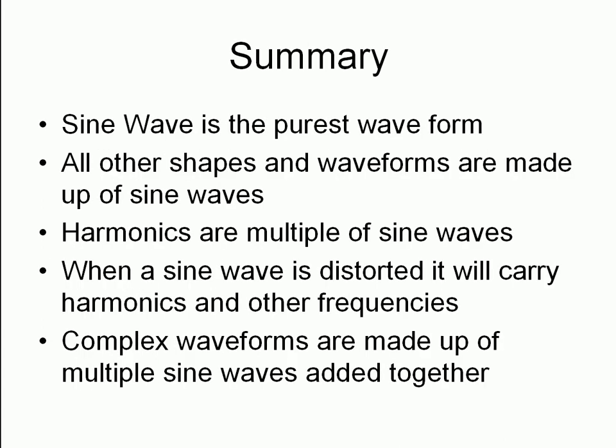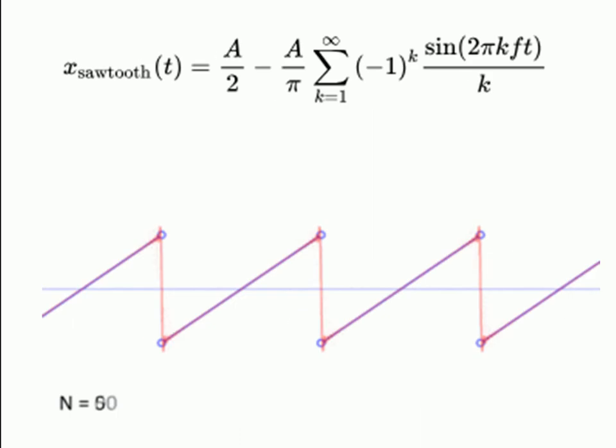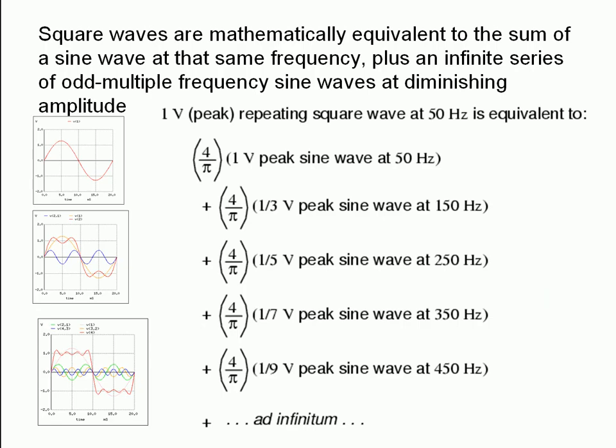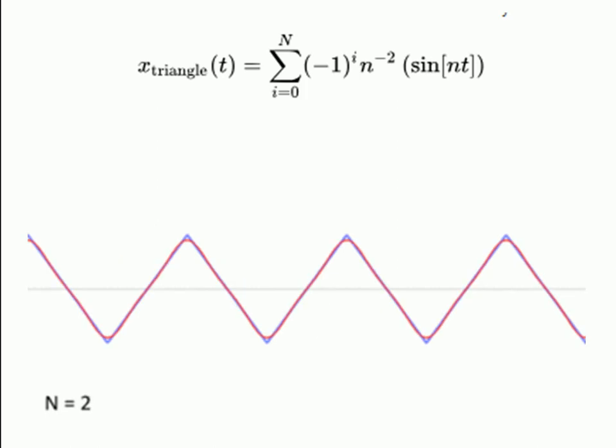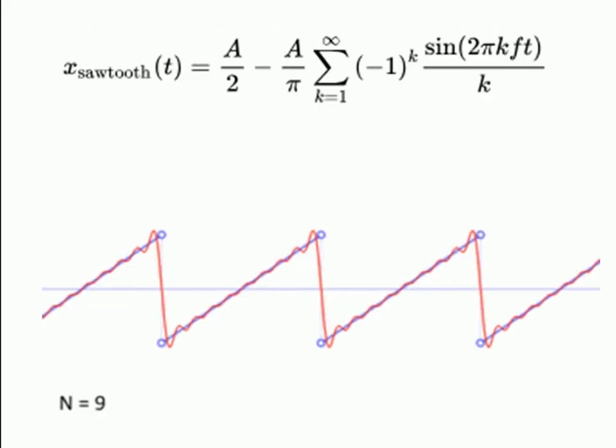To summarise: a sine wave is the purest waveform. All other shapes and waveforms are made up of sine waves. Harmonics are multiples of sine waves. When a sine wave is distorted, it carries harmonics and other frequencies. Complex waveforms are made up of multiple sine waves added together. For your assignment, you need to tell me a little bit about complex waveforms and come up with one of the waveform types we've discussed, and tell me a little bit about it. That's all — and that is the end of the presentation.